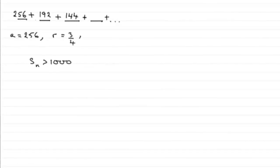Now for the last part, we've got to find the smallest value of n for which the sum of the first n terms of this series exceeds a thousand. How many terms have we got to have for this to be greater than a thousand?